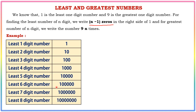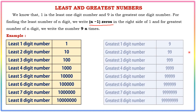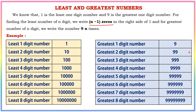The greatest number for any digit count uses all 9s. The greatest 1-digit number is 9. The greatest 2-digit number is 99. The greatest 6-digit number is 999999, and the greatest 8-digit number is 99999999.